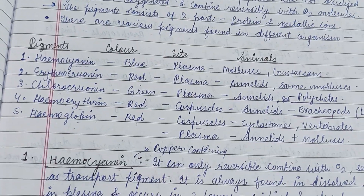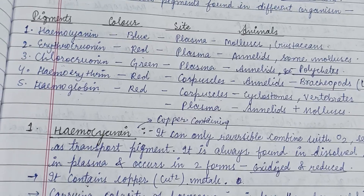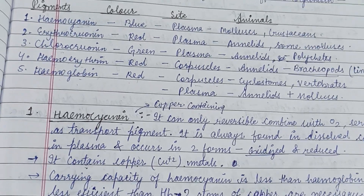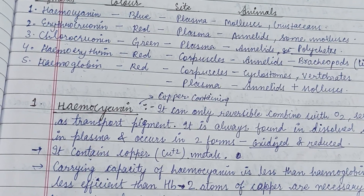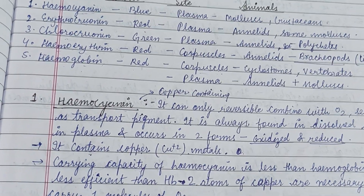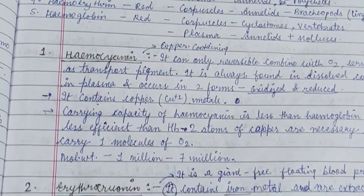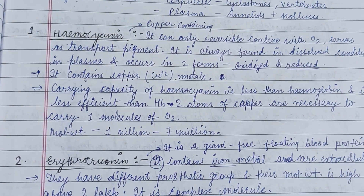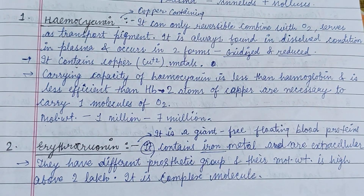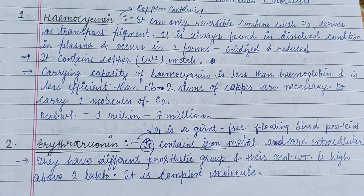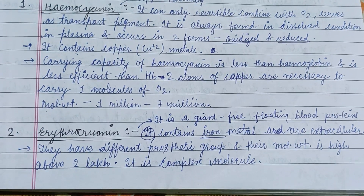There are various types of respiratory pigments present in different organisms: hemocyanin, erythrocruorin, chlorocruorin, hemerythrin, and hemoglobin. Hemocyanins are copper-containing pigments which combine with oxygen, serve as transport pigments,